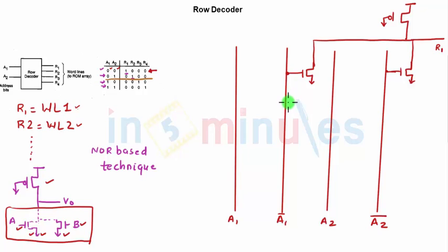The other one is A2 directly. You don't need to invert because A2 is 1 at that point in time when you need R2 to be high, so we'll connect it to A2.